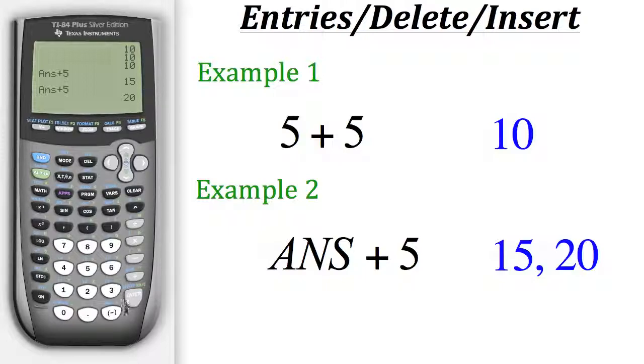So if we hit enter at this point without making a new entry, it'll do the answer plus 5 again. But in this case our previous answer would be 20, so if we hit enter it'll add 5 to that giving us a value of 25.